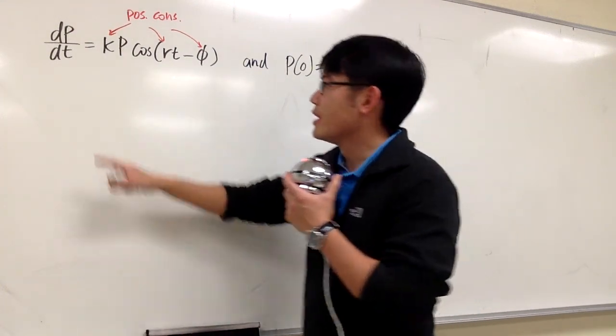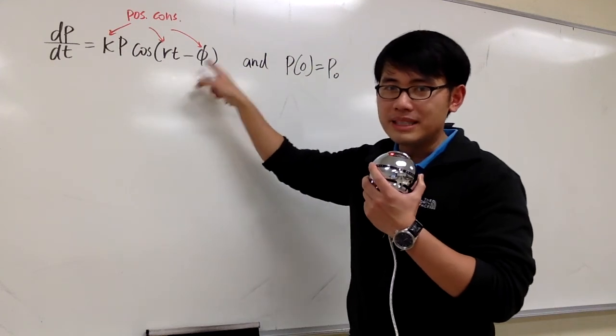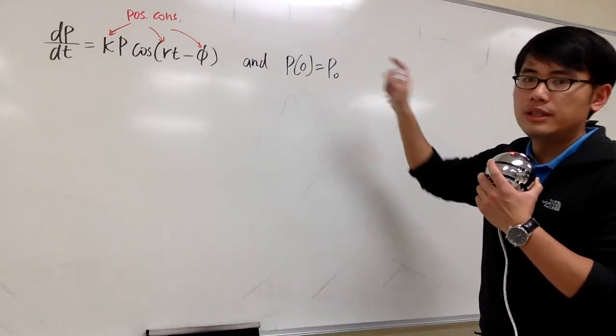Let's solve this differential equation real quick. We have dp/dt equals k times p times cosine of rt minus v, and we also have an initial condition, p(0) is equal to p0.